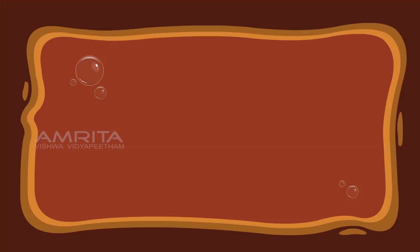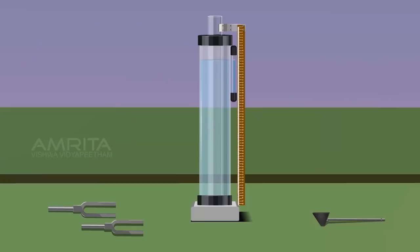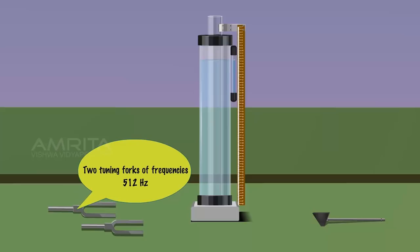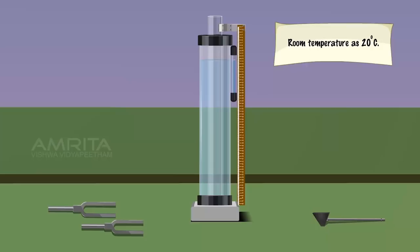Resonance Column experiment. Materials required: two tuning forks of frequencies 480 Hz and 512 Hz, a Resonance Column apparatus, and a rubber hammer.